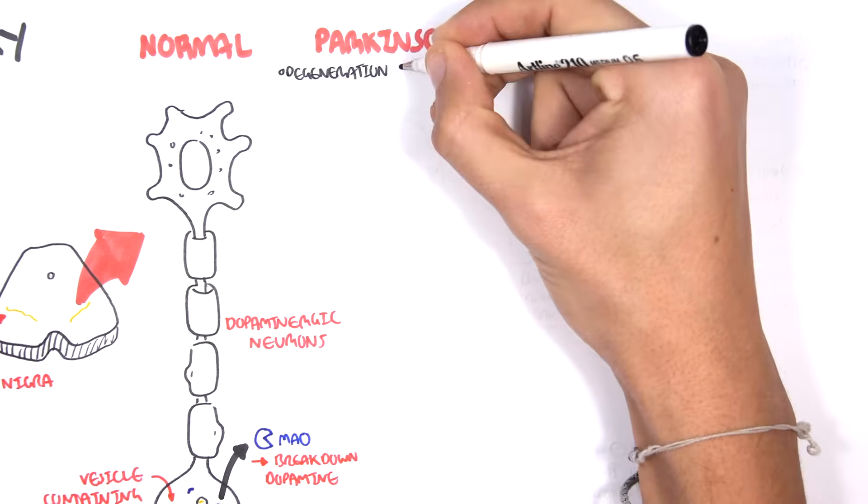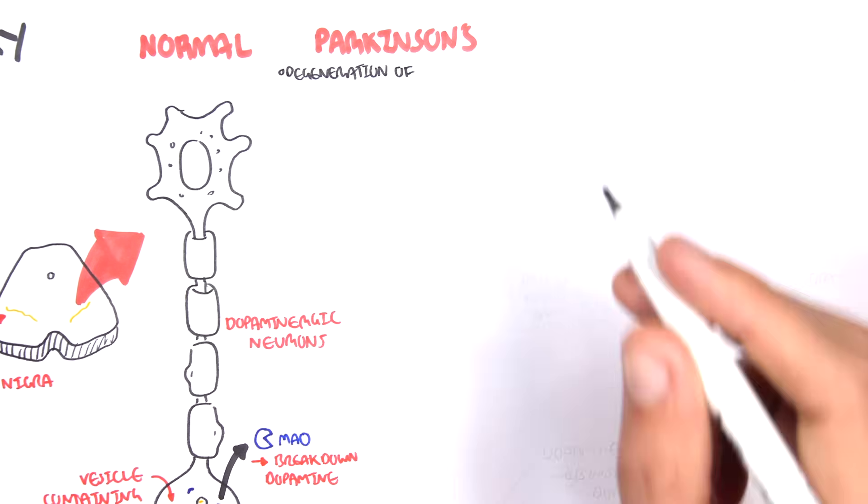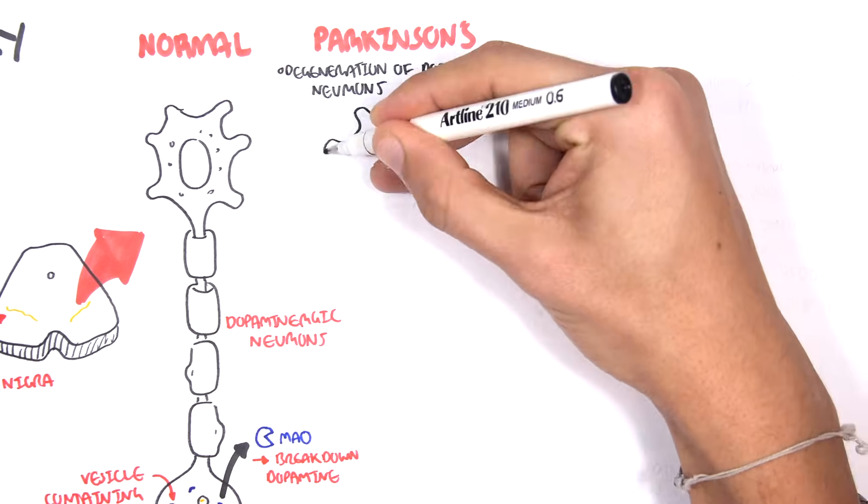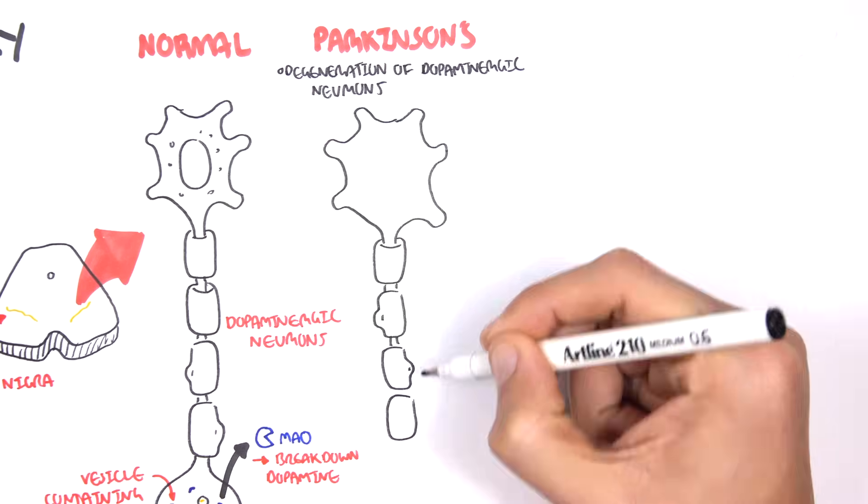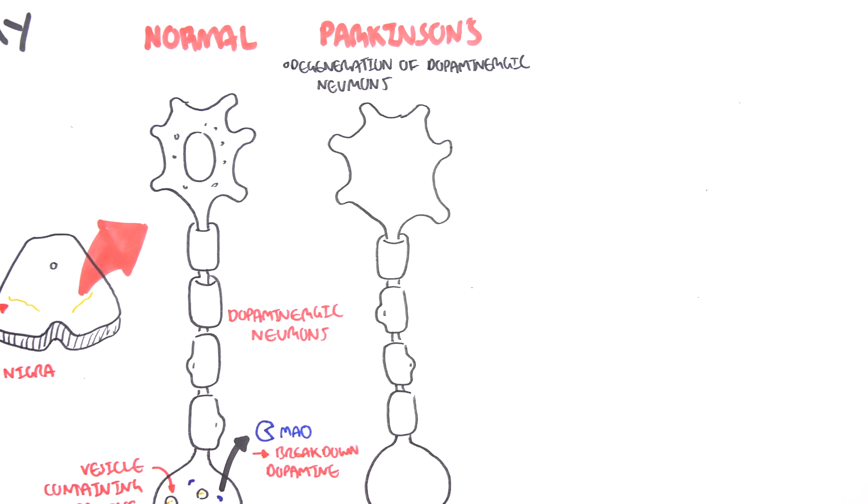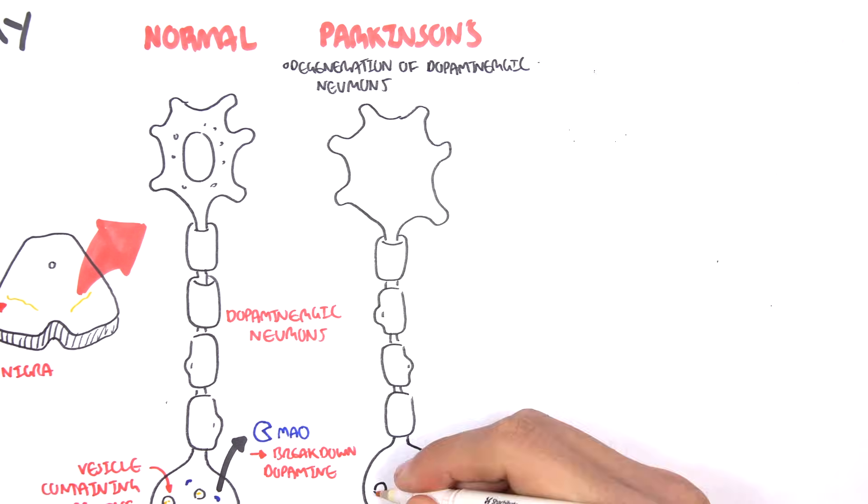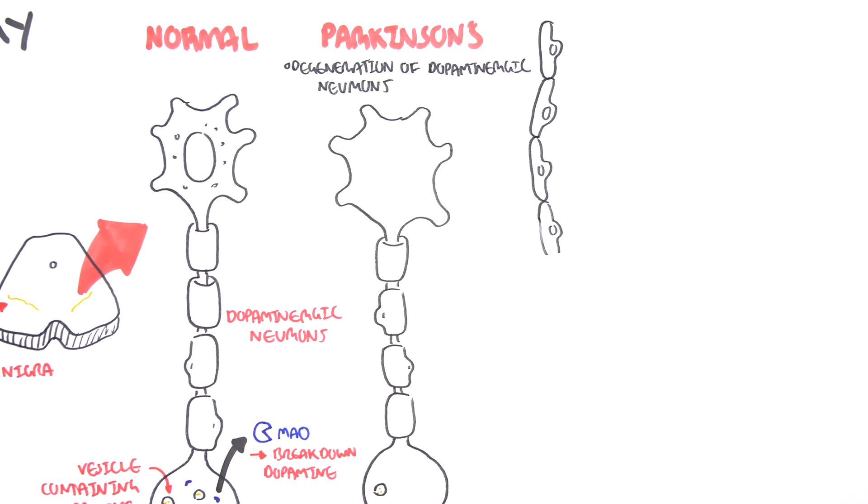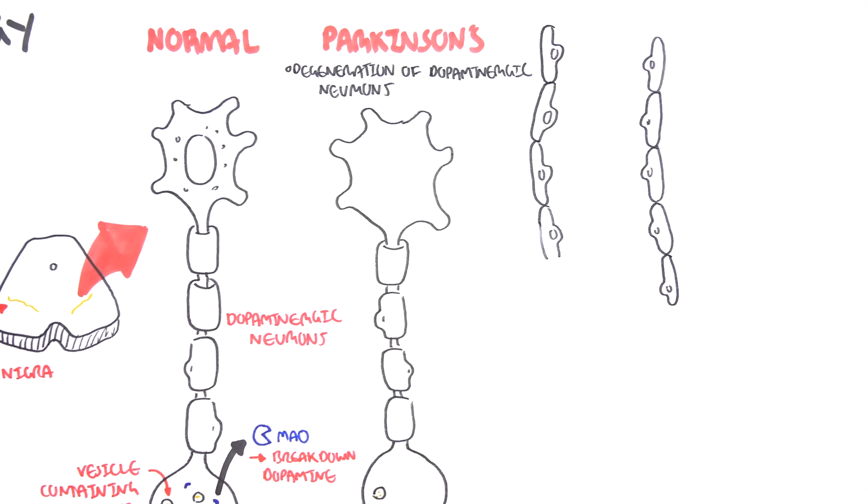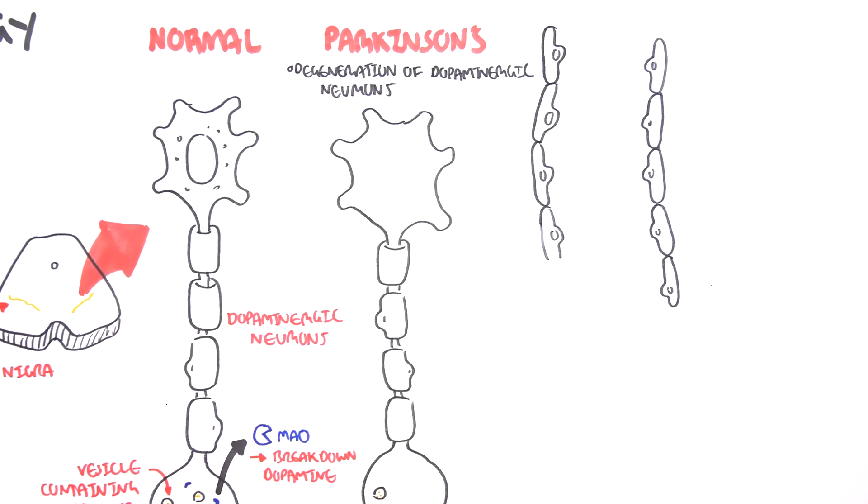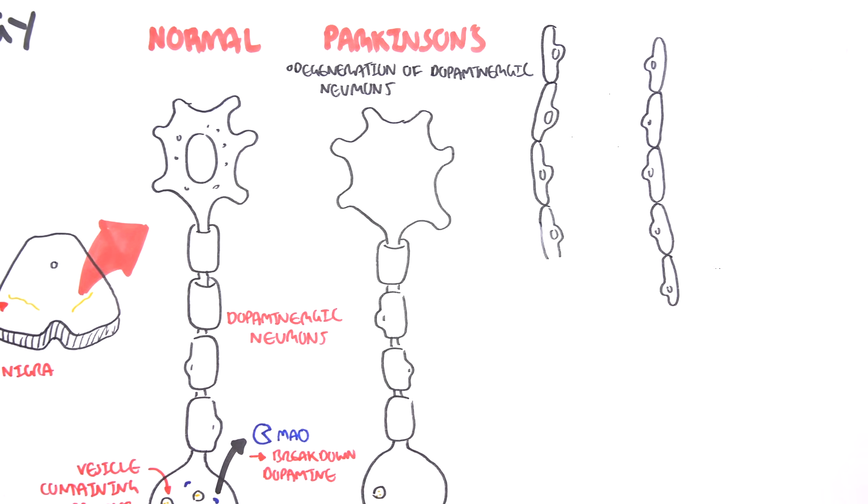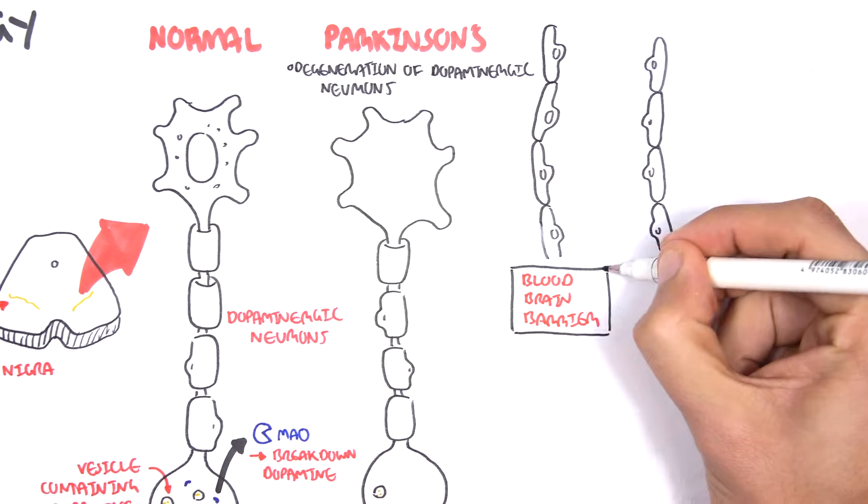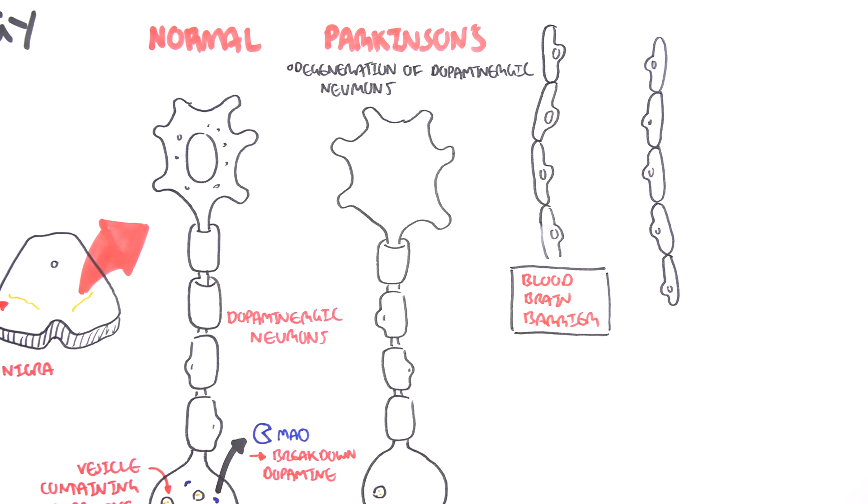Parkinson's disease is where we have degeneration of dopaminergic neurons. This means that we have not much dopamine or no dopamine being produced by the cells in this area. These neurons in the central nervous system, in the substantia nigra, are surrounded and protected by the blood-brain barrier.